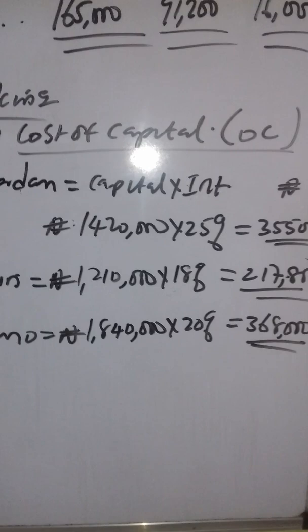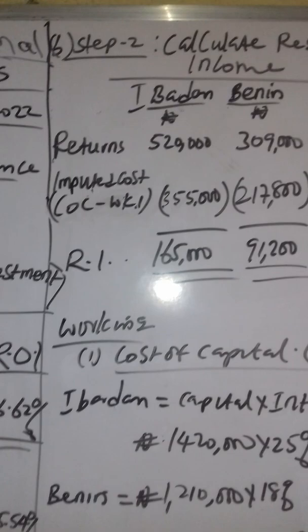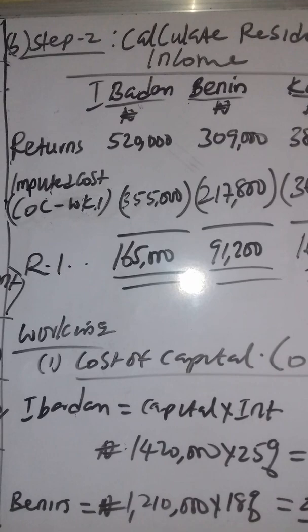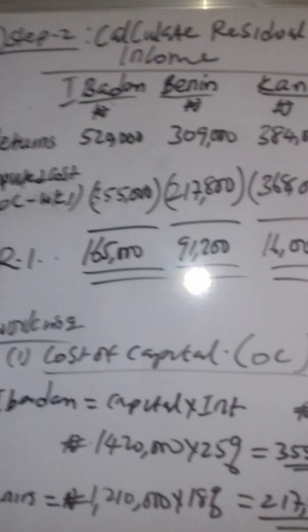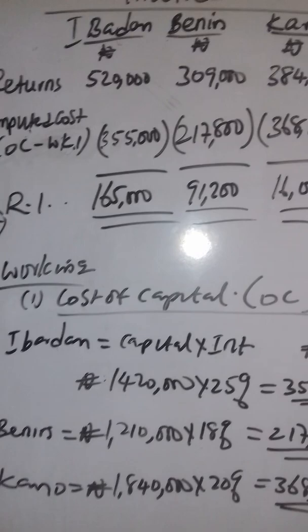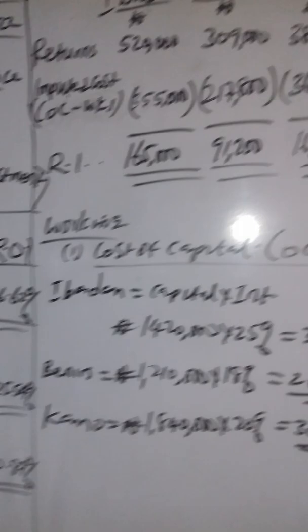Now let's look at the residual income solution. Residual income equals return less cost of capital. Ibadan had residual income of $165,000; Benin $91,200; and Kano $16,000. This tells us that Ibadan is still the leading branch when rating companies based on residual income. The third question asks us to evaluate which branch will accept the new project based on both the ROI and residual income models.